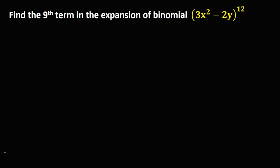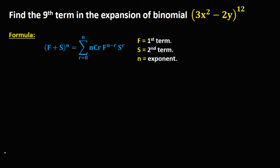Using the formula where f is the first term, s is the second term, and n is the exponent. Since in this formula r starts from 0, to find the 9th term, r is equal to 8.